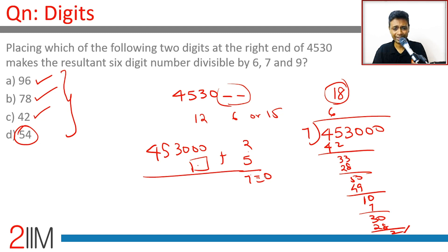I am just adding the two numbers, or I can just add the two remainders. 453000 gives a remainder of 2, so my number, the last two digits, should give a remainder 5.